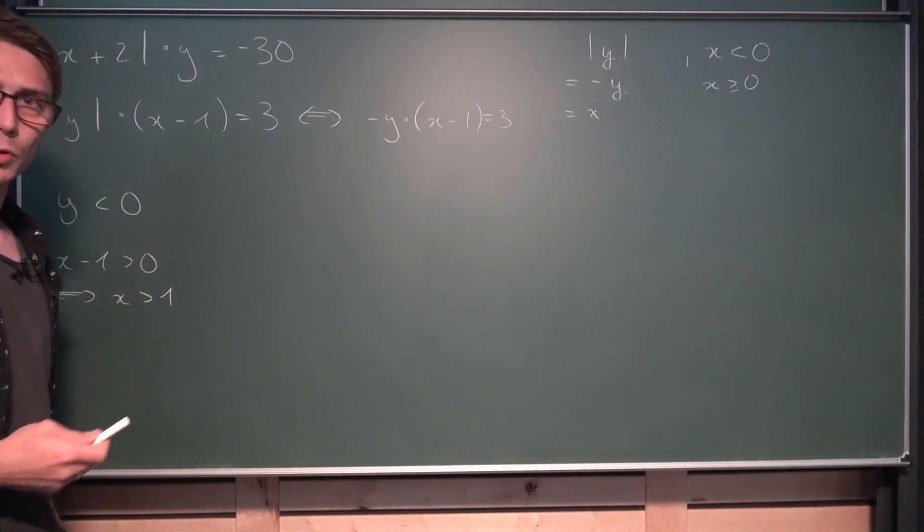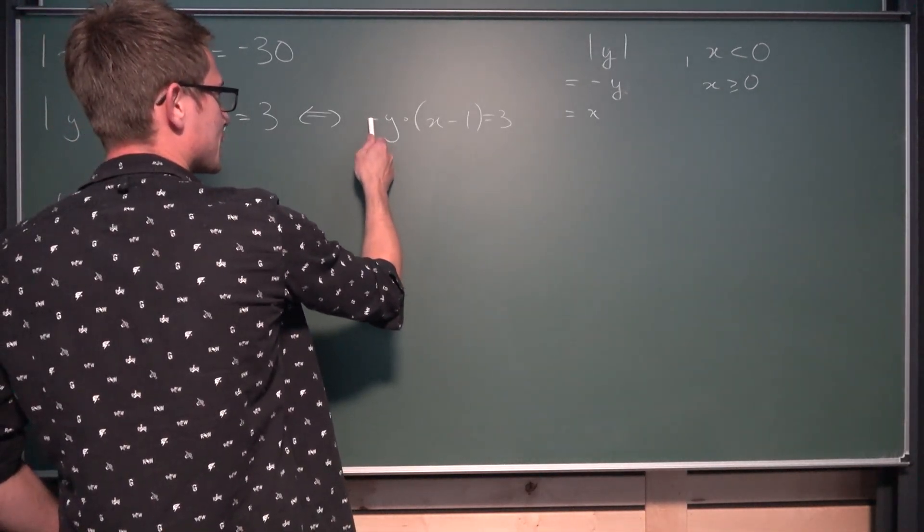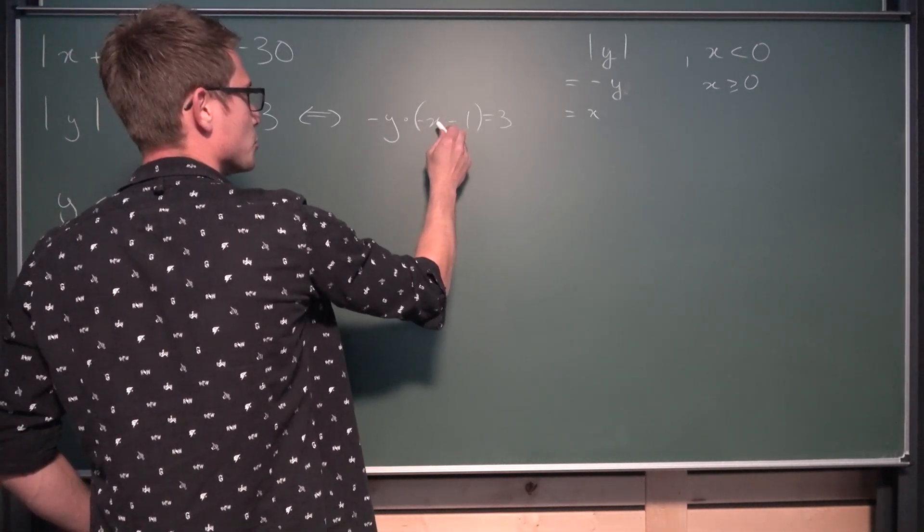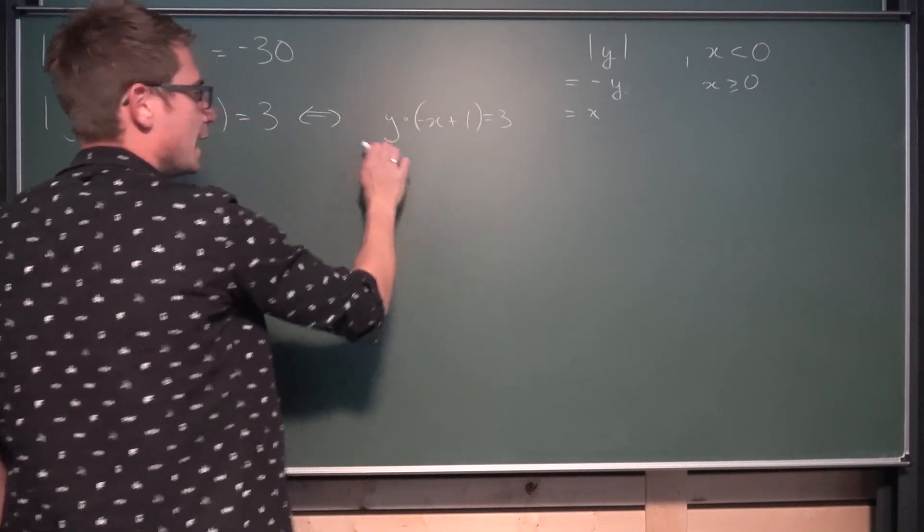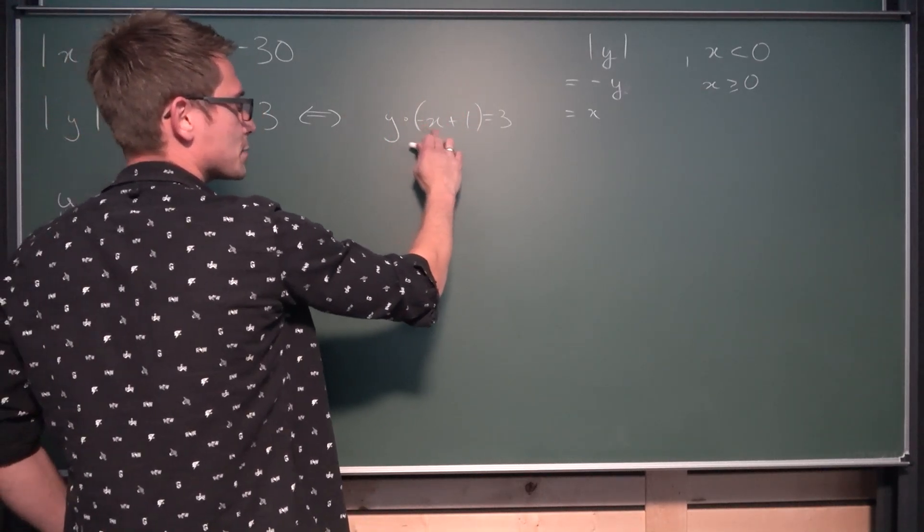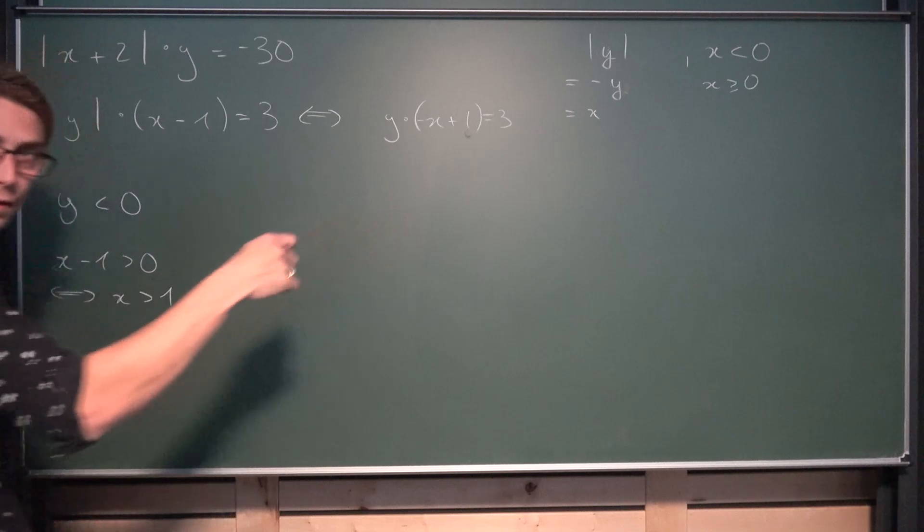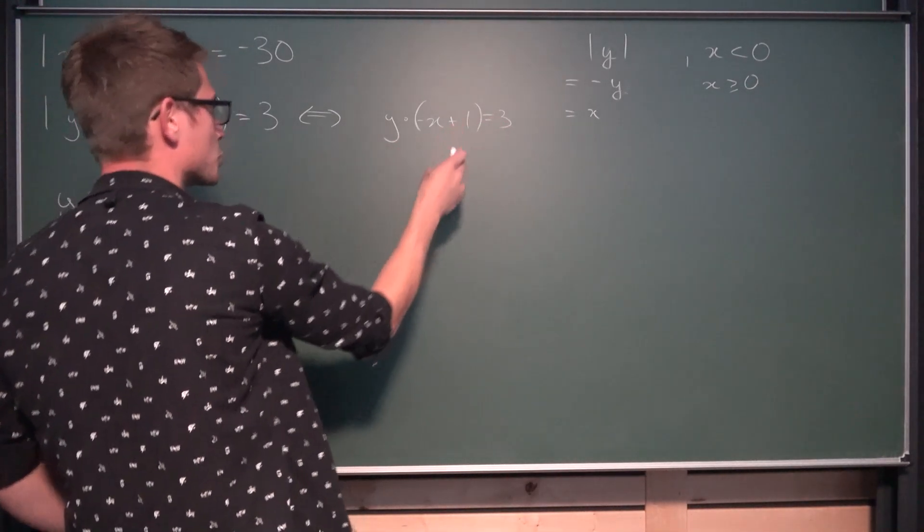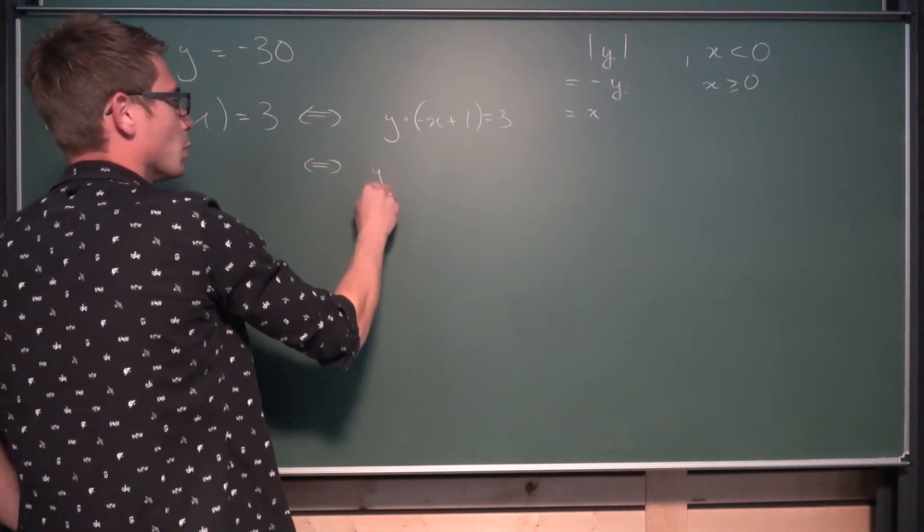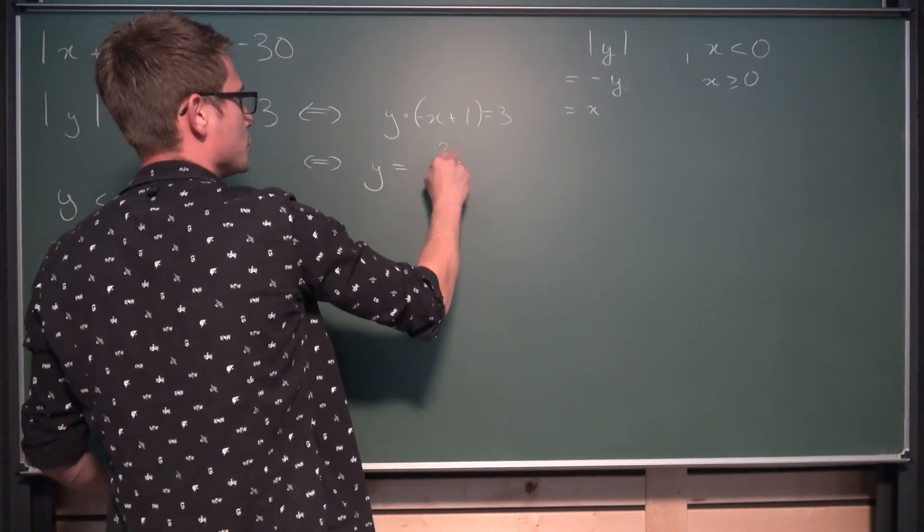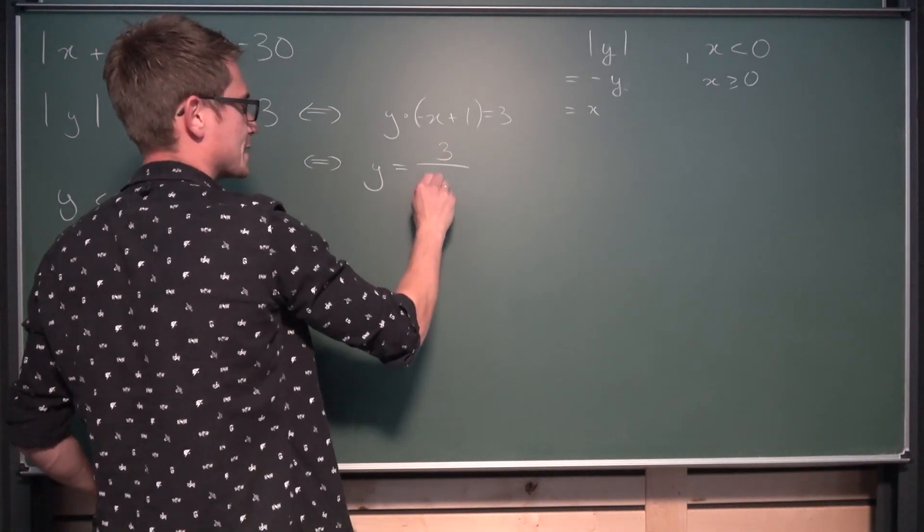And now what we can do is we can drag the negative 1 into here, turning this into minus x plus 1. And then we can divide both sides by this part right here. Think back. The strict order relation is not equal to 0, so we can divide both sides. Meaning y is going to have the value of 3 divided by 1 minus x.